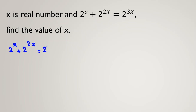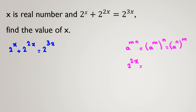...equal to 2 to the 3x. We will see all of them have 2 to the x. If we apply the rule a to the mn equals a to the m to the n, for example 2 to the 2x equals 2 to the x squared, and 2 to the 3x equals 2 to the x cubed.